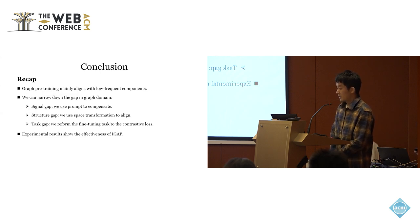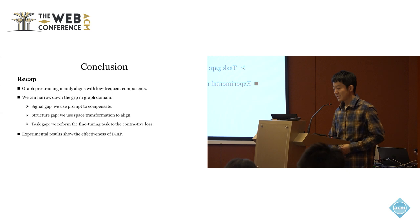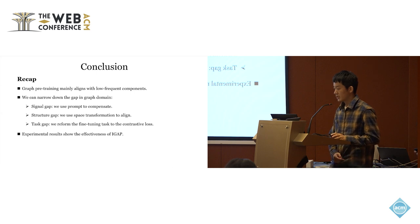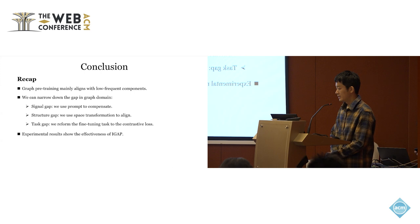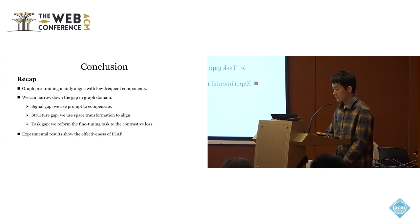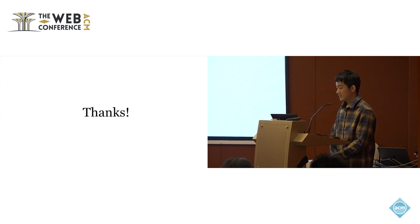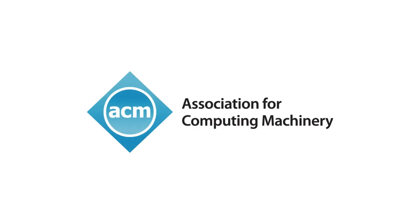At last, let's make a recap of my presentation. We first analyze the graph pre-training process, and we find that the graph pre-training aligns graph signals more to the low-frequent components. Then we narrow down the gap in the graph domain: for the signal gap, we use a prompt to compensate it; for the structure gap, we use space transformation to align this gap; and for the task gap, we reform the fine-tuning task into the contrastive form. We show the experimental results to demonstrate the effectiveness of our method. That's all for my presentation. Thanks for your listening.